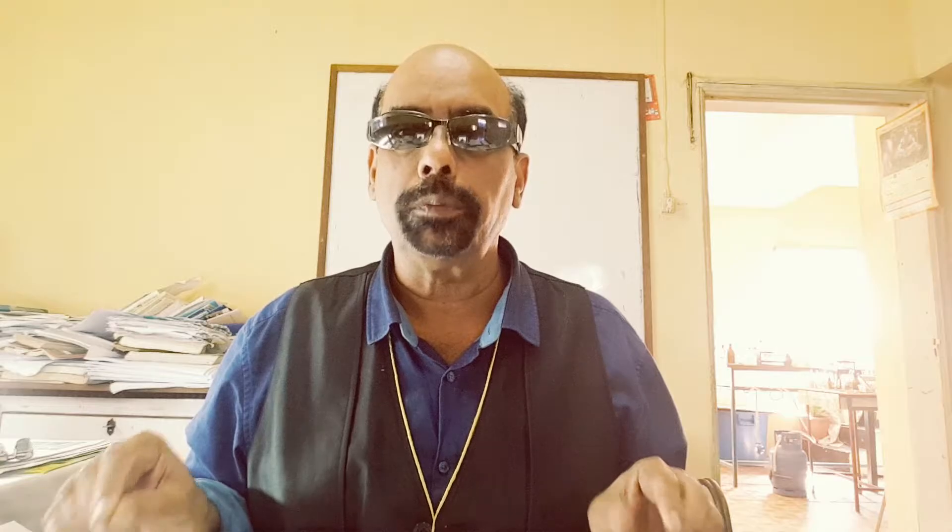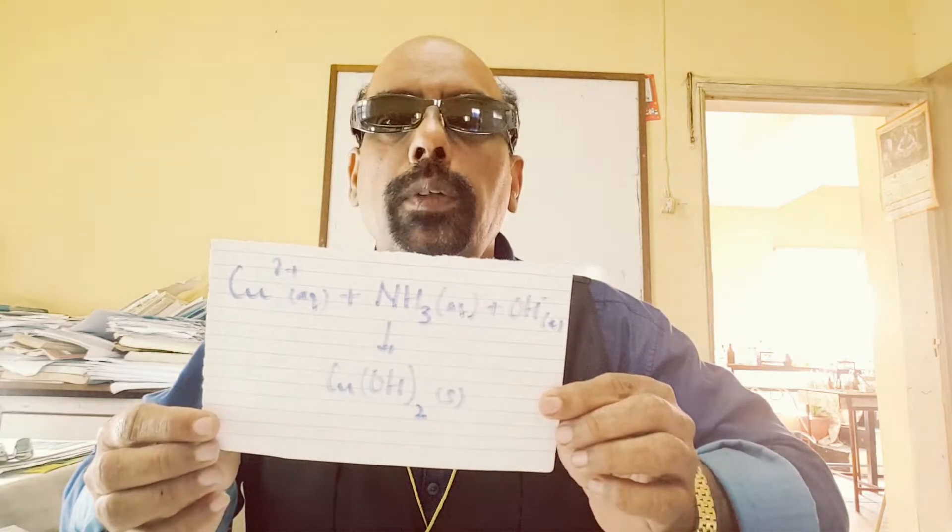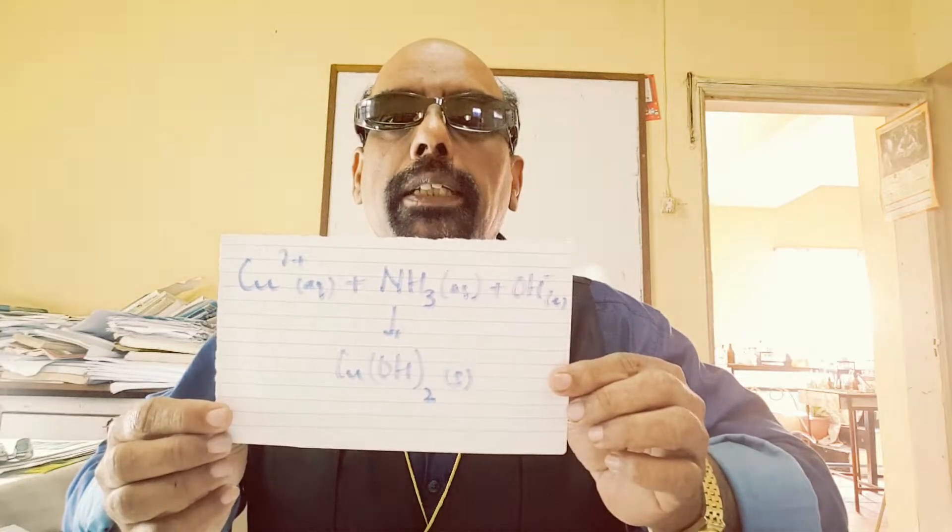To test for copper ions, we can use aqueous ammonia. When we add aqueous ammonia to a solution containing copper ions, we obtain a blue precipitate. The blue precipitate is copper hydroxide. When we add more ammonia, the blue precipitate dissolves and we get a deep blue solution containing copper bonded to four ammonia molecules.